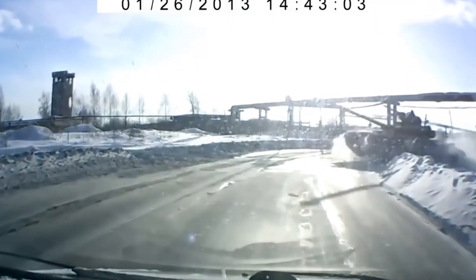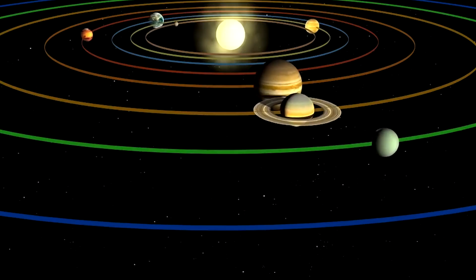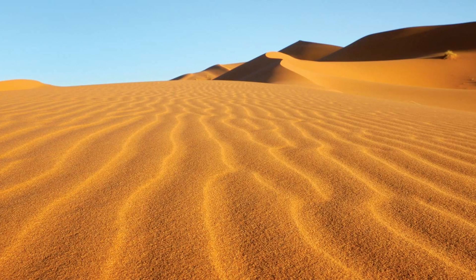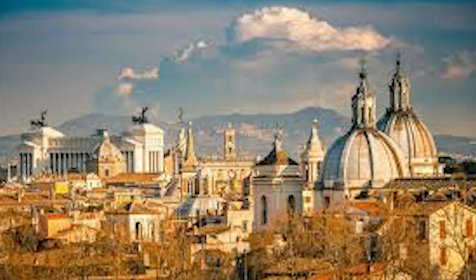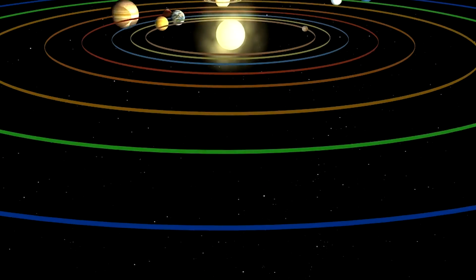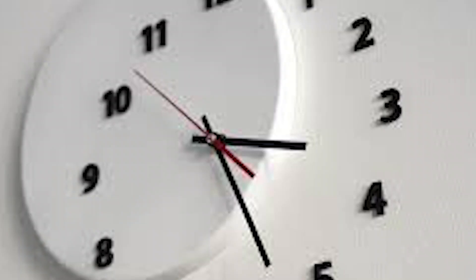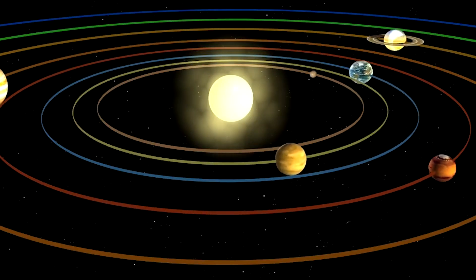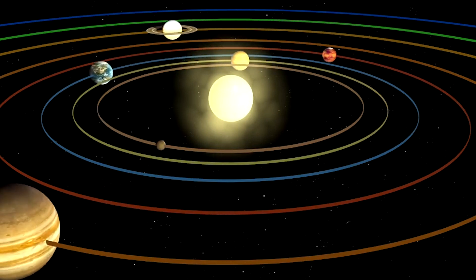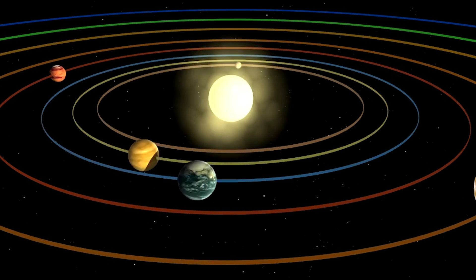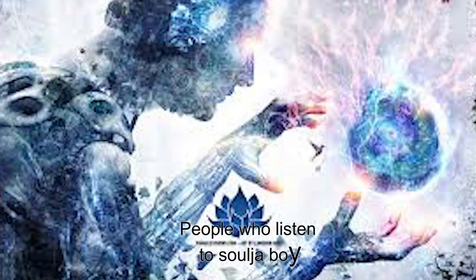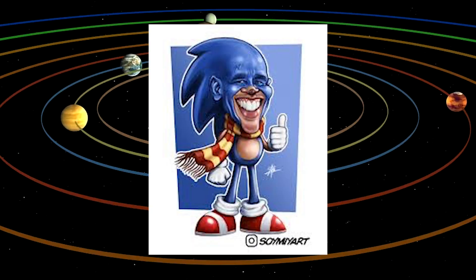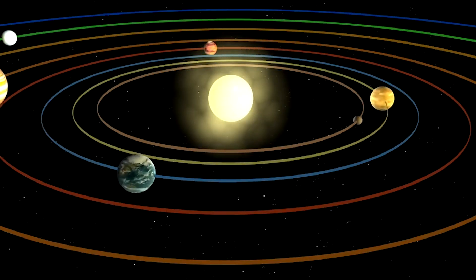When it was winter, the calendar said it was supposed to be summer, and when it was spring, the calendar said fall. The calendar was off. It wasn't that they didn't know how long a day or a year was — they actually knew perfectly well. The errors came about when trying to make it easy to understand.